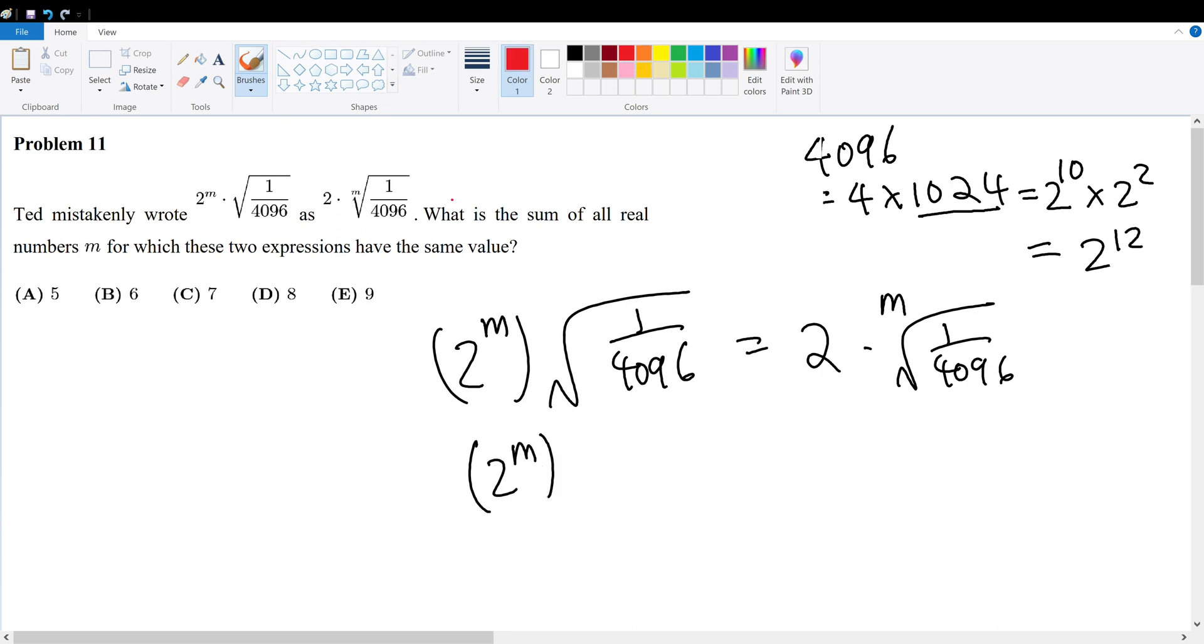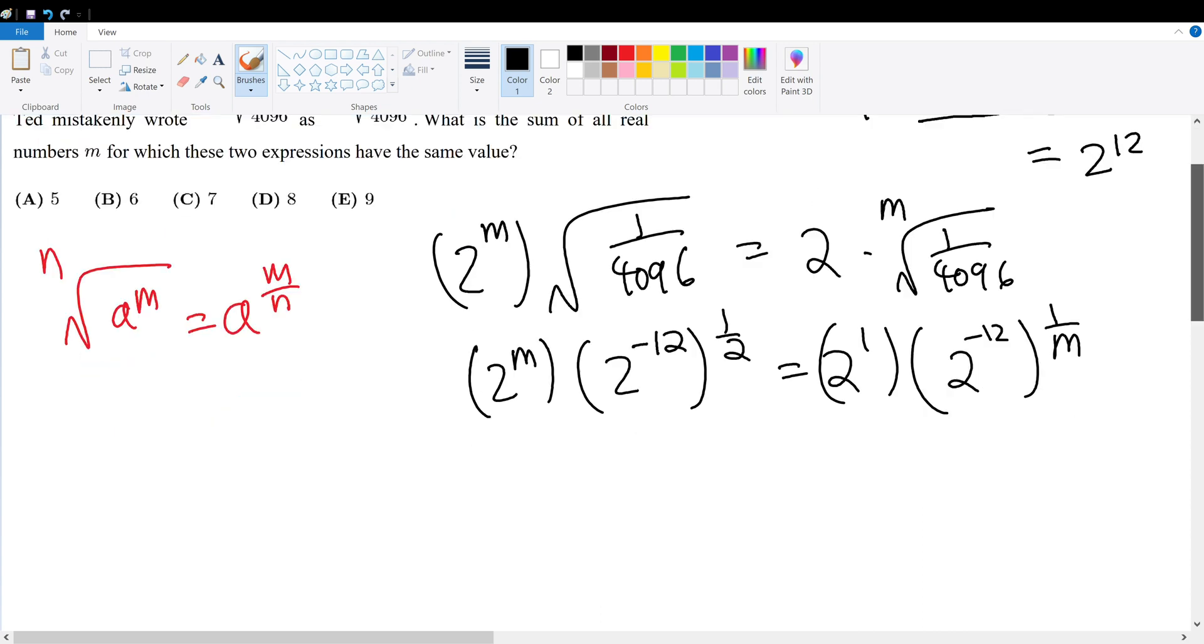Now one property of exponents is that the root of a to the m taken to the nth root can be rewritten as a to the m over n power. If we use this formula then we can say that this is equal to 2 times negative 1 over negative 12 because it's a fraction taken to the half root which must be equal to 2 to the first times the negative 2 to the negative 12 taken to the 1 over m root from the given formula.